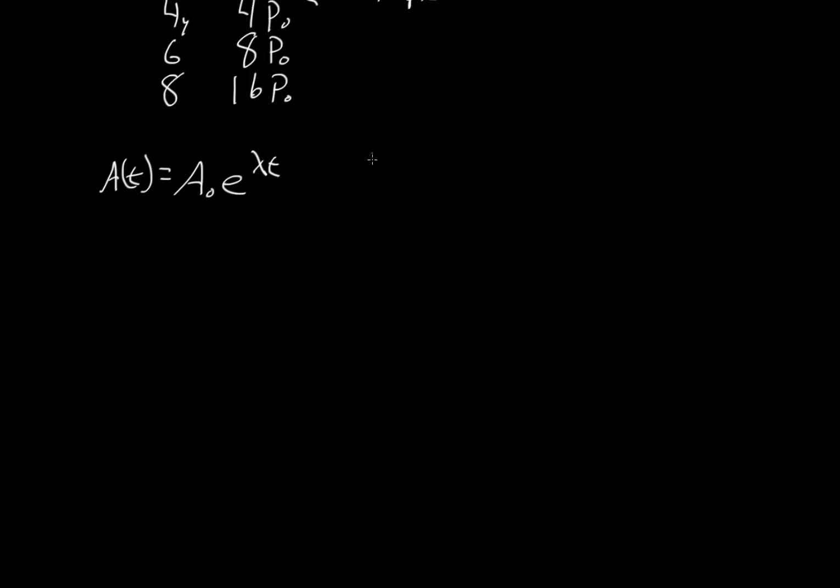We have some information already. We know that at time zero, p of time zero equals p-naught, and p at two years equals 2p-naught. So therefore we can automatically know both these equations. We can take this equation, this relationship, and drop it into this form and solve for our lambda. So that's what we're going to do.